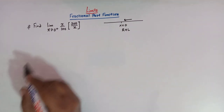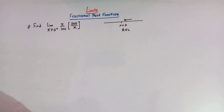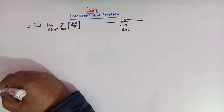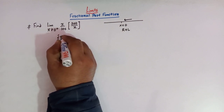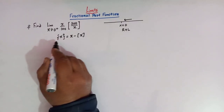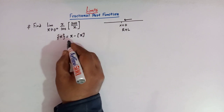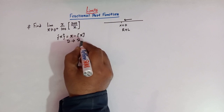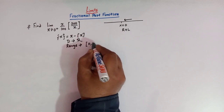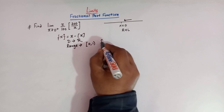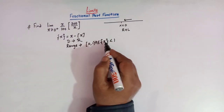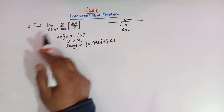So let us find out the value of this limit. What we will do here is apply the definition of a fractional part function. We know that the fractional part of x is defined as x minus the greatest integer of x. The domain of the fractional part function is the set of all real numbers and the range is the interval 0 to 1. So the fractional part function lies between 0 and 1. This concept will be utilized here to evaluate this limit.